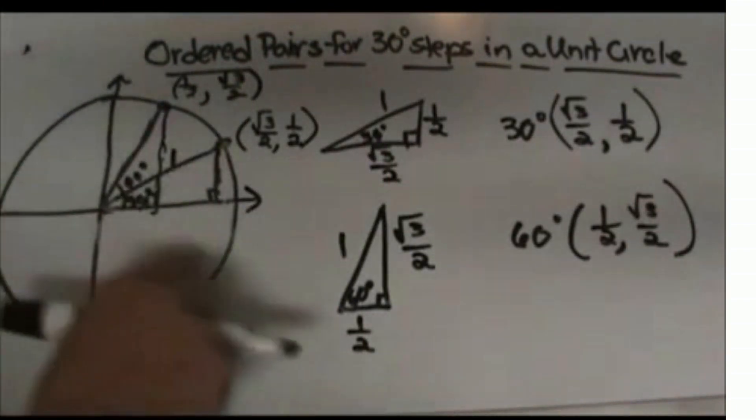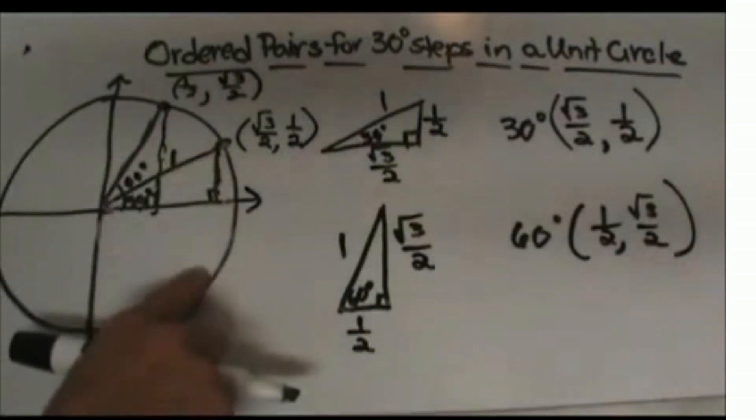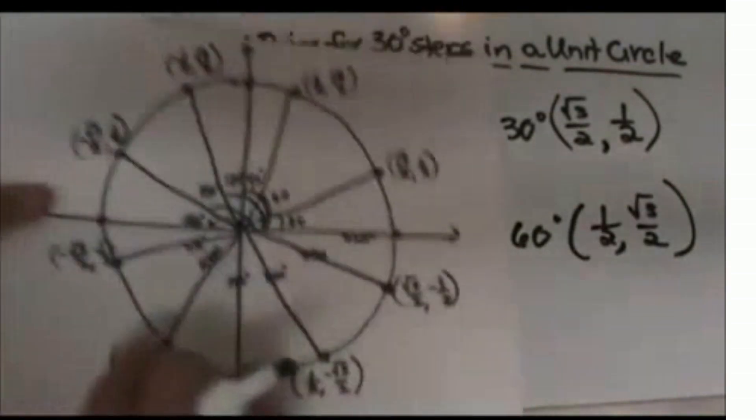The other quadrants are basically going to be mirror images. Let me show you how to find those.